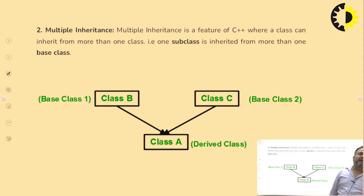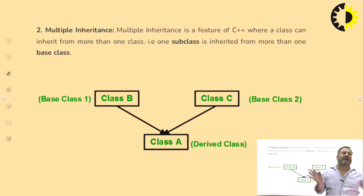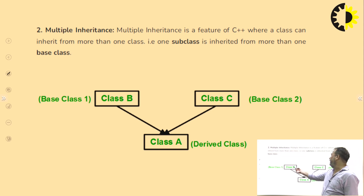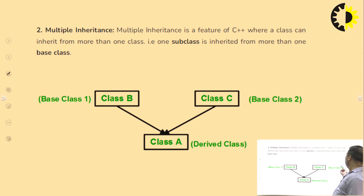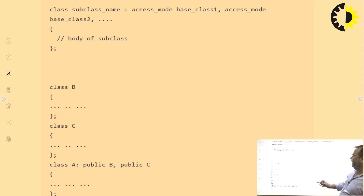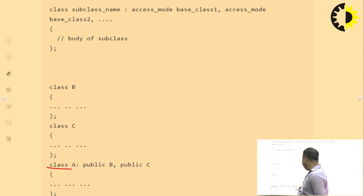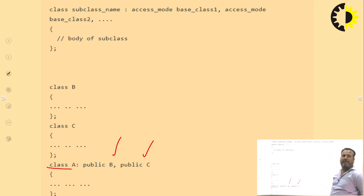Multiple inheritance means a class has more than one base class. Like class A having two parent classes B and C — this comes under multiple inheritance. The syntax is: class A colon public B, public C, meaning A has two parent classes B and C.